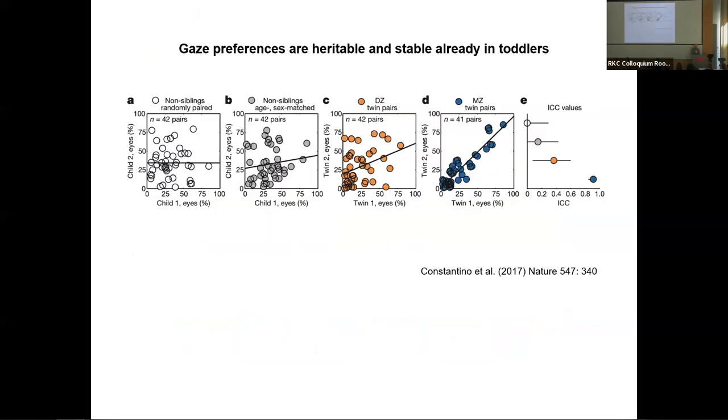This is more detail on what other people like Ami Klin and John Constantino already published some time ago in relation to autism, actually, in this particular Nature paper. But they showed that this is already stable in very young children, in toddlers, where if you have one particular twin and you quantify heat maps or looking at a face, the proportion that a particular toddler looks at the eyes in an image, and you have their twin, you see that there's a strong positive correlation for identical twin pairs. So if my twin is down here and doesn't look much at the eyes, then neither do I. If my twin looks at the eyes a lot in stimuli, then so do I. So it's heritable. And it's less heritable in the dizygotic ones and even less so in the unrelated individuals.